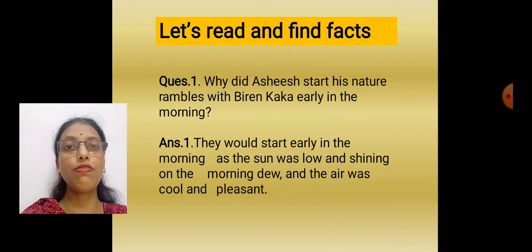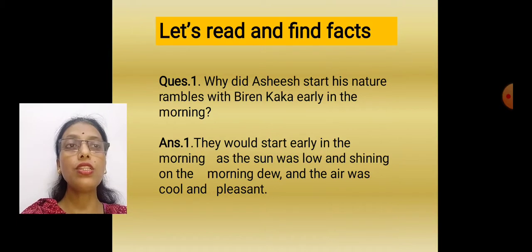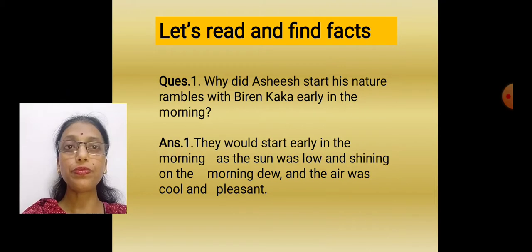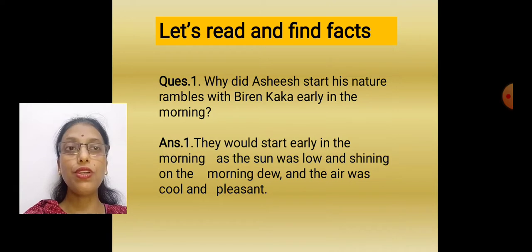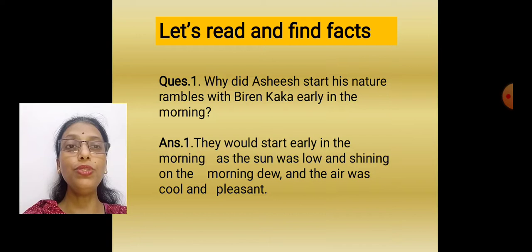We will do 'Let's Read and Find Facts.' Question number 1: Why did Ashish start his nature rambles with Bireen Kaka early in the morning? A ramble is a walk taken for pleasure. The answer is they would start early in the morning as the sun was low, just beginning to rise and shining on the morning dew. Those early rays of sun were shining on the morning dew and the air was cool and pleasant. So they decided they will start early.